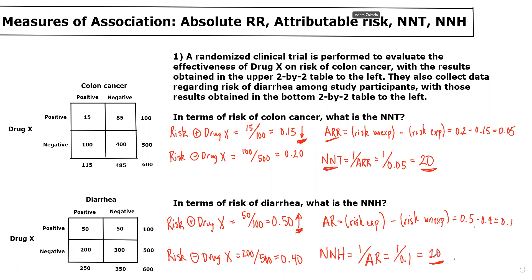The interpretation is: for every 10 patients who receive drug X rather than placebo, one additional patient will have diarrhea.